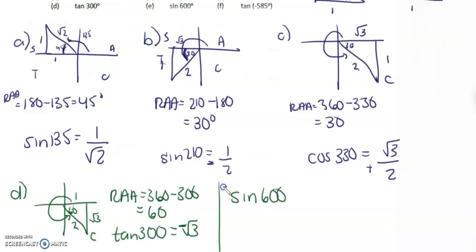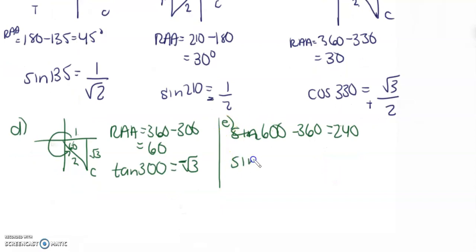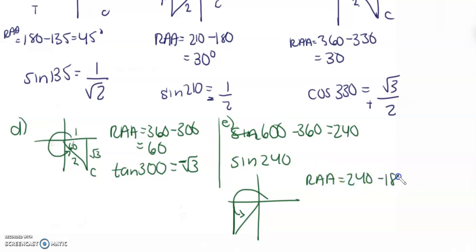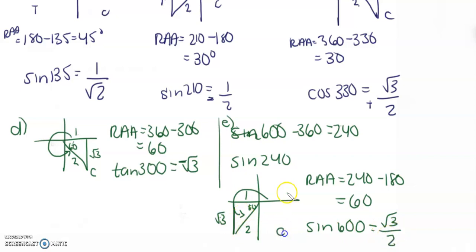Sine of 600 — we can't deal with 600, so let's subtract 360 and find a coterminal angle in the first rotation. We get 240. So this question is actually asking us what is the sine of 240. Our related acute angle is 240 minus 180, which gives us 60 degrees. Opposite 60 is root 3, over hypotenuse 2. This is in the T quadrant, so the ratio is negative: sine of 600 equals negative root 3 over 2.